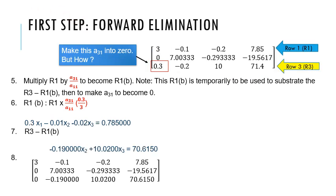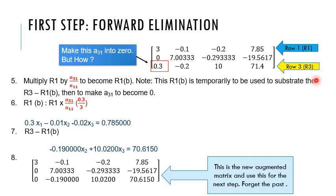Next, in the first column, we will make this element A31 into 0. Same procedure, we will make the element A31 into 0 using R1 and R3 equations.